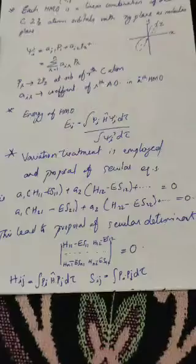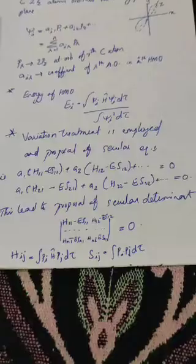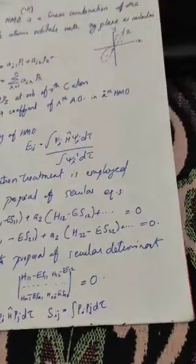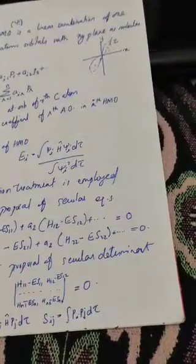We propose a secular equation as follows: A1·(H11 − E·S11) plus A2·(H12 − E·S12) equals 0, and A1·(H21 − E·S21) plus A2·(H22 − E·S22) equals 0. From this secular equation, we propose the secular determinant to solve it. The secular determinant has the form: |H_ij − E·S_ij| equals 0, where H_ij equals the integral of p_i · H · p_j · dtau, and S_ij equals the integral of p_i · p_j · dtau.